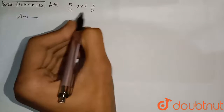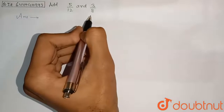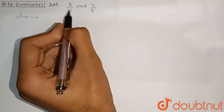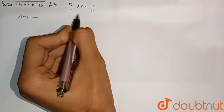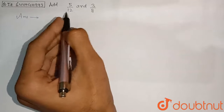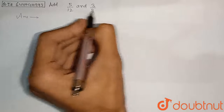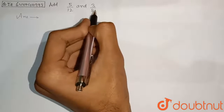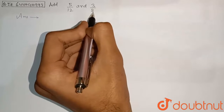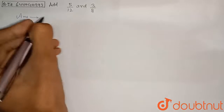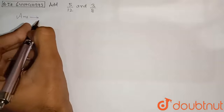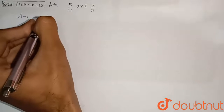To add two rational numbers, we have to first take the LCM of the denominators. The denominator in the first fraction is 12, and in the second fraction the denominator is 8. So we need to find the LCM.